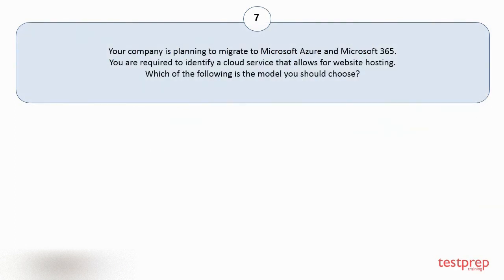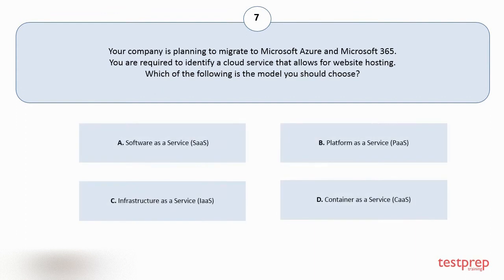Question number seven. Your company is planning to migrate to Microsoft Azure and Microsoft 365. You are required to identify a cloud service that allows for website hosting. Which of the following is the model you should choose? The correct answer is option B.